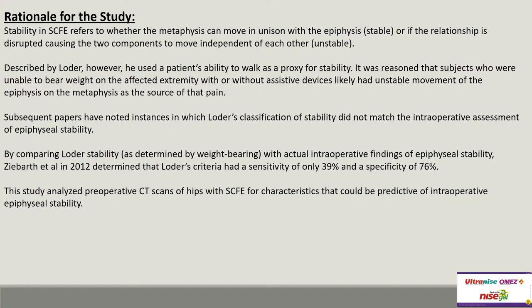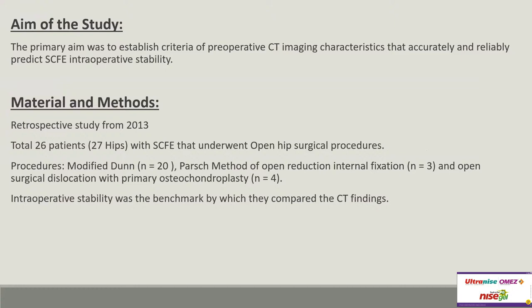The study analyzed pre-operative CT scans of 26 patients with 27 SCFE hips undergoing open hip procedures — 20 modified Dunn, 3 Parsch open reductions, and 4 open surgical dislocations with primary chondroplasty. The primary aim was to establish CT imaging criteria that accurately and reliably predict intraoperative SCFE stability, with intraoperative stability as the benchmark.